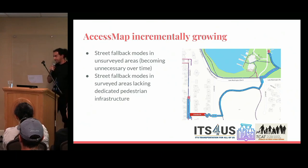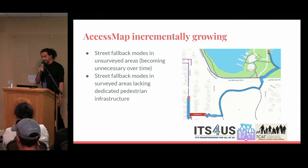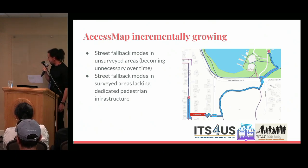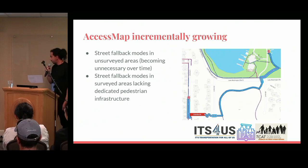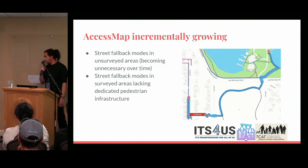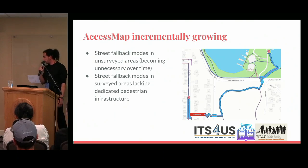AccessMap is incrementally growing — the more people map, the more complete the routes become. In this example, the red portion is actually using a road just to complete a route, either because there's no mapping in that area, it has not been surveyed, or because there's no pedestrian infrastructure.